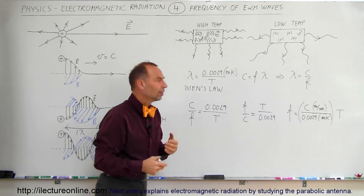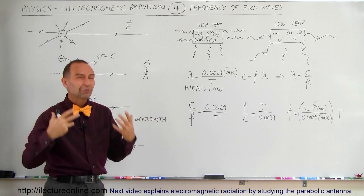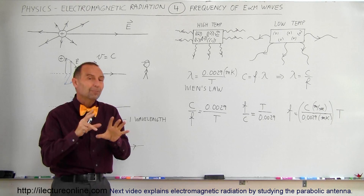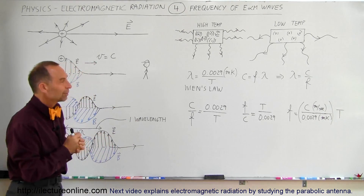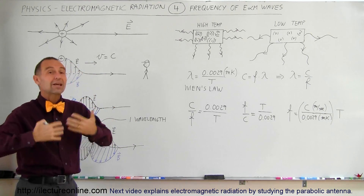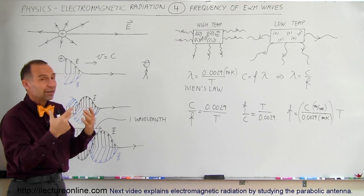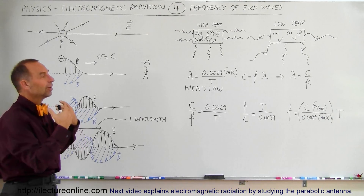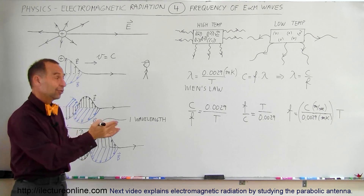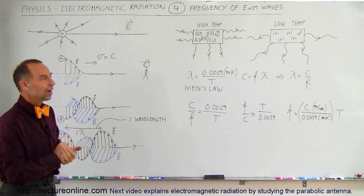The hotter the object gets, the higher the frequency and the higher the energy being emanated from the object. This gives us a better understanding of what electromagnetic radiation is and how it is generated from any object in the universe, simply because the atoms inside are vibrating. The hotter they are, the faster the vibration and the higher the frequency of radiation — directly proportional to the temperature in Kelvin of the object.